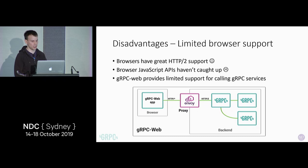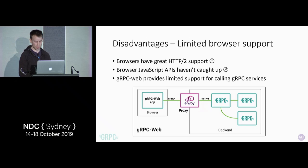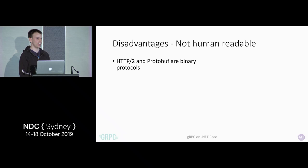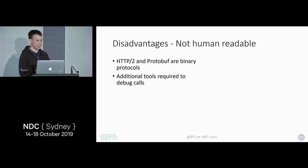Currently our implementation doesn't support gRPC-web natively — you can use a proxy. One of the things we'll explore in the coming year is whether it's something we should implement properly — if you've got feedback on that, please let me know. And it's not human-readable. HTTP/2 and protobuf are binary protocols — you can't read them without tooling, and you also need to have the contract to translate those numbers into property types and say what the value is. You need additional tools to debug calls.